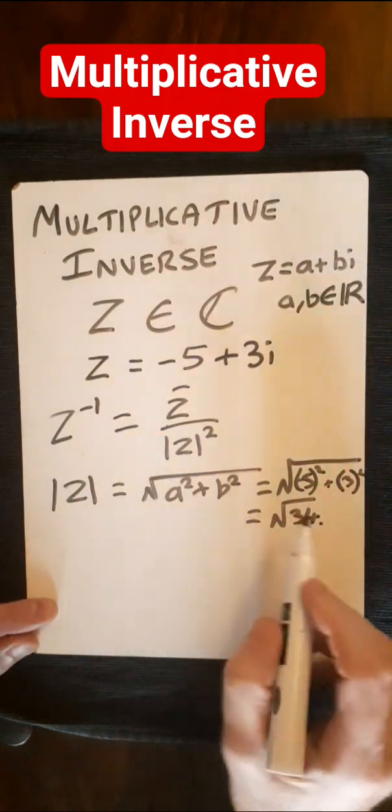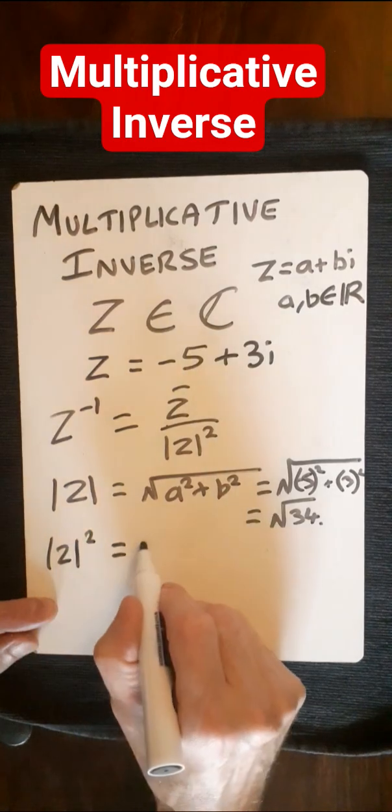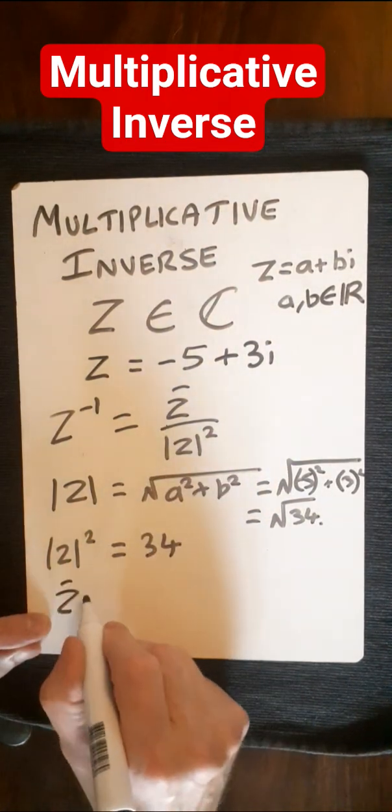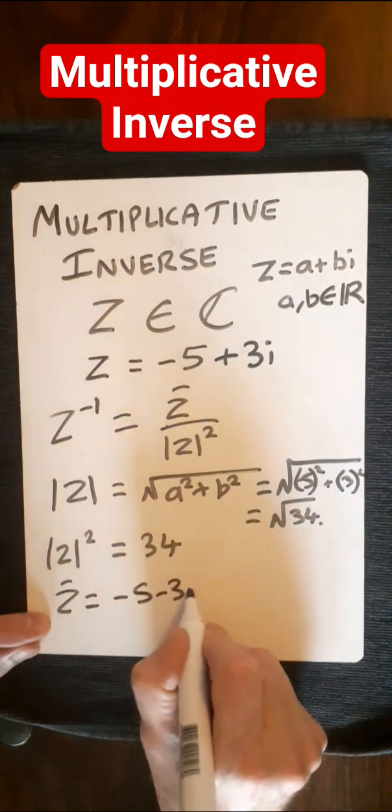So then if we square that, we'll just end up with 34. Now the conjugate of z, that's just simply minus 5 minus 3i.